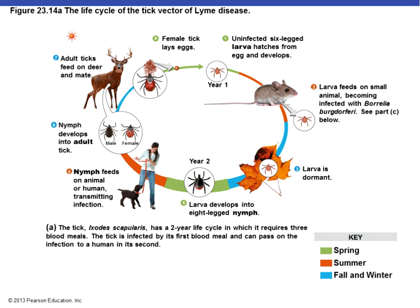The life cycle of Lyme disease: uninfected six-legged larvae hatch in spring and feed on an infected animal reservoir, becoming infected. By fall and winter the larvae go dormant. The next spring, the larvae develop into an eight-legged nymph, and it is this nymph that feeds on a human or pet and transmits the bacteria. The nymph then develops into an adult tick that feeds on deer, restarting the cycle.